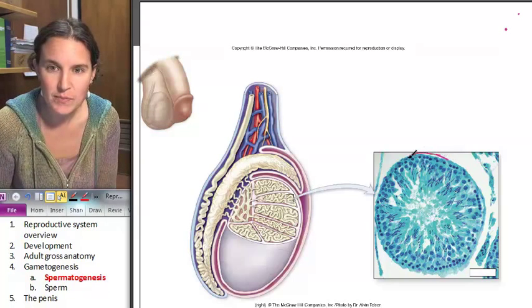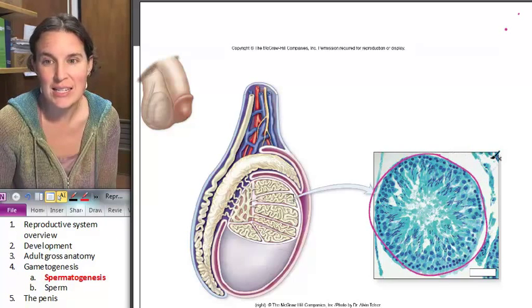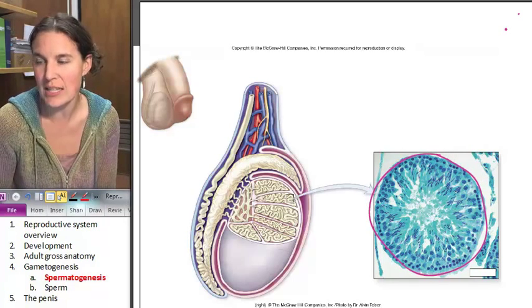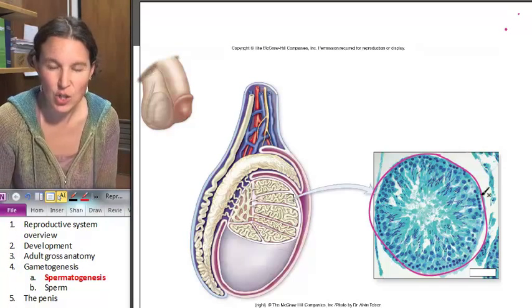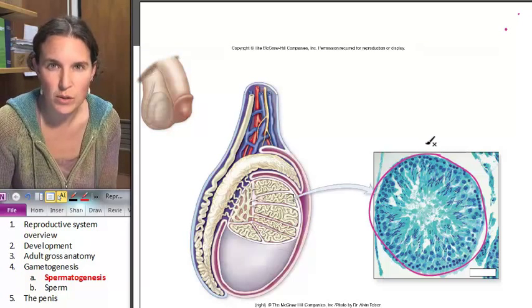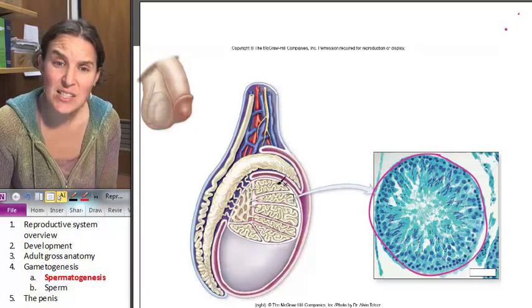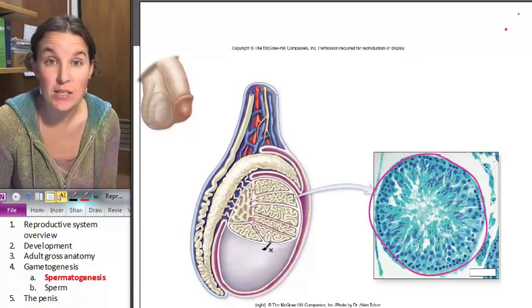So this structure right here, this round structure, guess what? Histology, indeed it is so. And we will be taking a look at this. This entire, it's a cross section of one of these tubes. It's called a seminiferous tubule. So your testes are actually made of a whole bunch of seminiferous tubules.